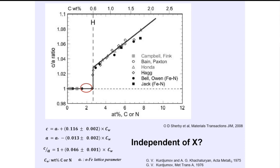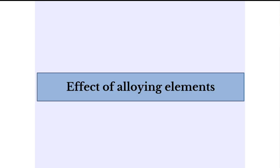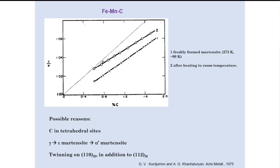Originally it was believed that the C/A ratio of martensite is independent of the concentration of substitutional alloying elements. Let us examine this because there are some very interesting results that I don't have a self-consistent theory to explain. Looking at the effect of alloying elements — these are results from iron-carbon-manganese alloys — freshly formed martensite has a C/A ratio less than the ideal value. When heated to room temperature, C/A ratio increases, which is the opposite of what would be expected. Several explanations have been put forward and none of them appear to be satisfactory.